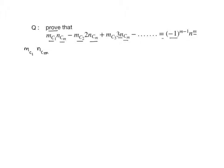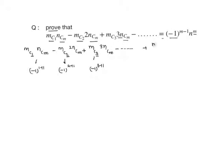We take mC1 · nCm minus mC2 · 2nCm plus mC3 · 3nCm minus dot dot dot. If r equals 1 we get a positive sign, r equals 2 gives negative, r equals 3 gives positive. So the general sign is minus 1 power r plus 1. The last term is mCm · mnCm with sign minus 1 power m plus 1.